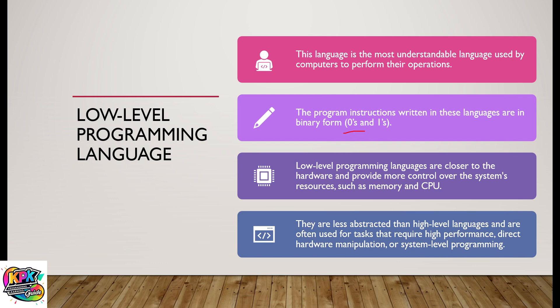Low-level languages are written in binary form — zeros and ones. They are closer to the hardware and provide more control over computer system resources such as memory and the CPU. They are less abstracted than high-level languages and are often used for tasks that require higher performance, direct hardware manipulation, or system-level programming.